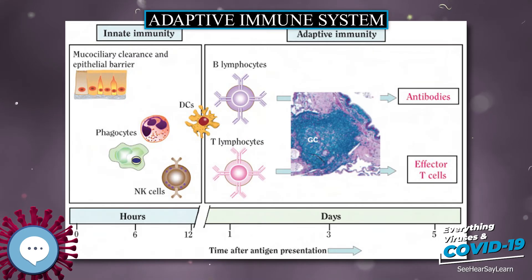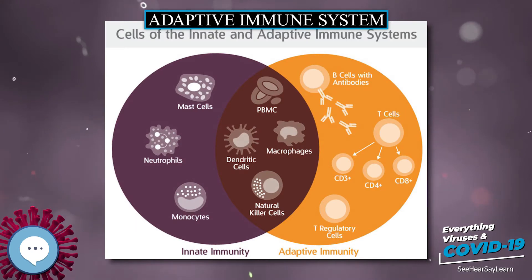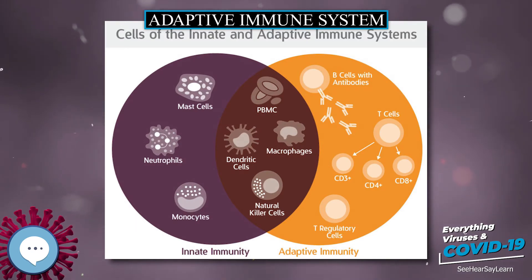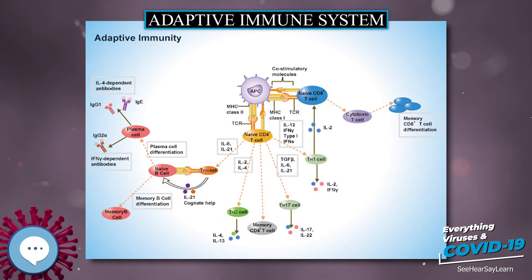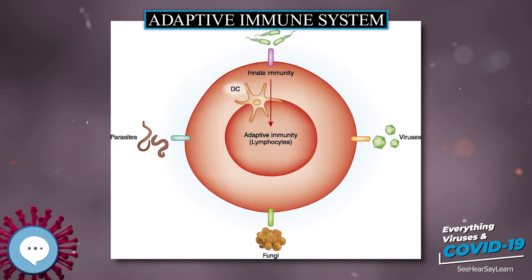Like the innate system, the acquired system includes both humoral immunity components and cell-mediated immunity components. Unlike the innate immune system, the acquired immune system is highly specific to a particular pathogen. Acquired immunity can also provide long-lasting protection — for example, someone who recovers from measles is now protected against measles for their lifetime.